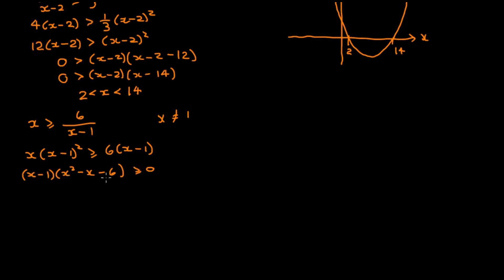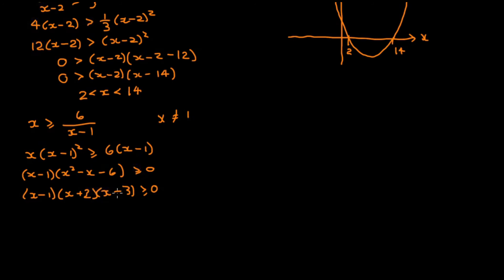So we have a linear factor (x minus 1) and a quadratic factor (x squared minus x minus 6). We need to factorise this quadratic into two linear factors. We could use the quadratic formula, or we can guess the factors. We need two numbers that multiply to give minus 6 and add to give minus 1 — that's minus 3 and plus 2. So we get (x minus 1)(x minus 3)(x plus 2) greater than or equal to 0. This is a cubic polynomial.